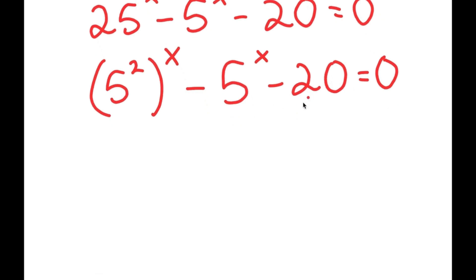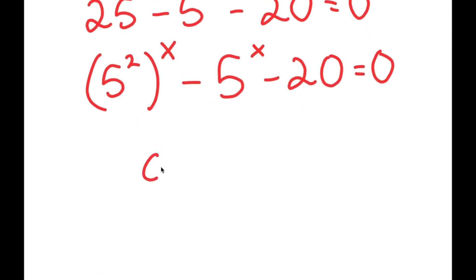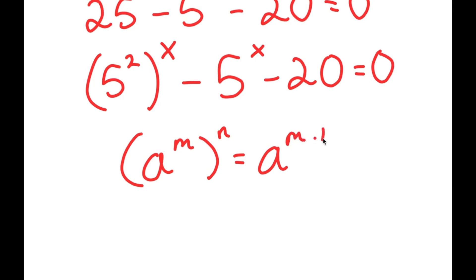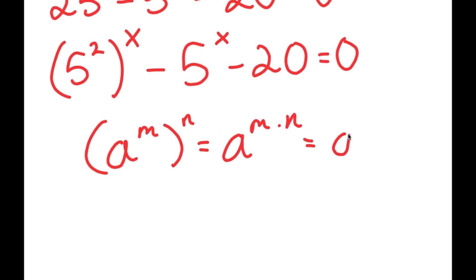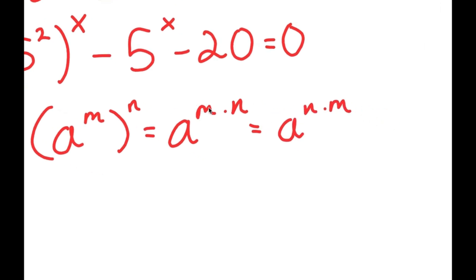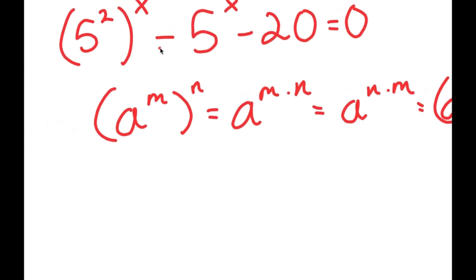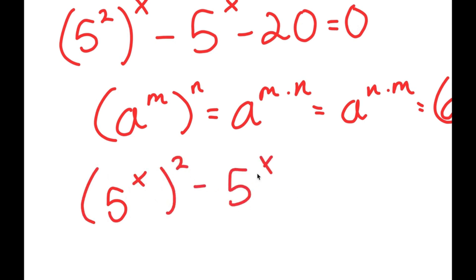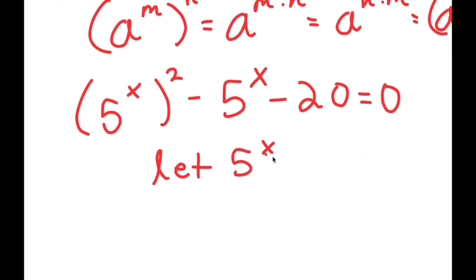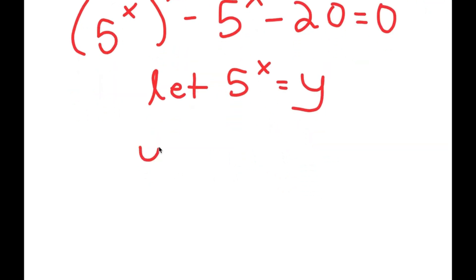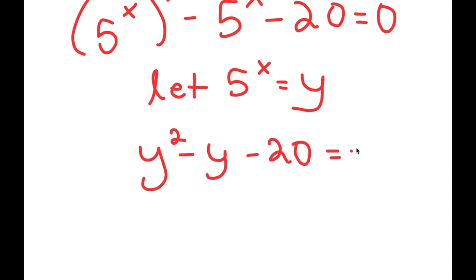Using the rule a^(m·n) = a^n to the power of m, I can rewrite 5 squared to the power of x as 5 to the power of x, all squared. Now letting y equal 5 to the power of x, I get y squared minus y minus 20 equals 0.